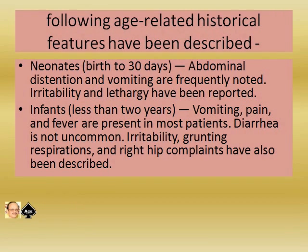Some age-related history features are described. In newborns (birth to 30 days), abdominal distension and vomiting are frequently noted, and irritability and lethargy have been reported. In infants less than 2 years, vomiting, pain, and fever are present in most patients. Diarrhea is not uncommon. Irritability, grunting, respiration changes, and right hip complaints have also been described.